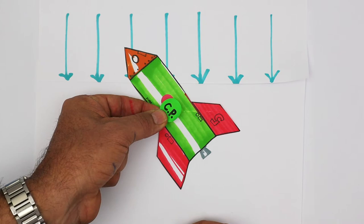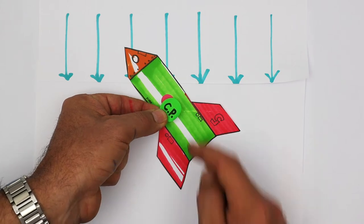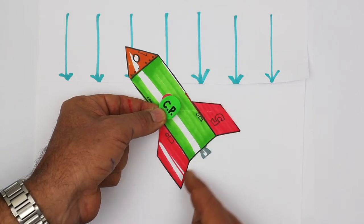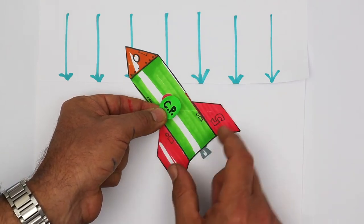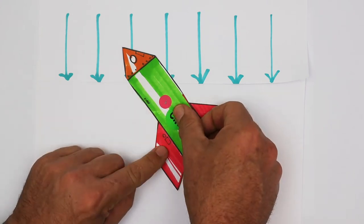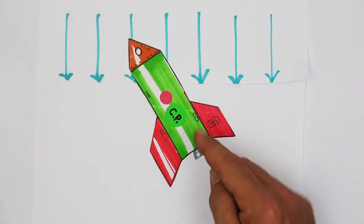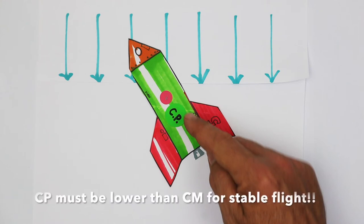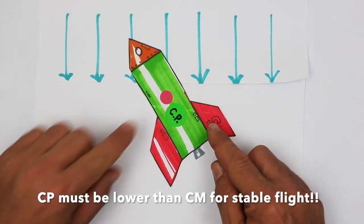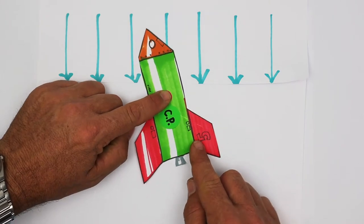The centre of pressure is the point on the rocket where the area on one end is equal to the surface area on the other end. These big fins mean there's more surface area towards the bottom. So the centre of pressure could be roughly around there. It's important to note that the centre of pressure has to be below the centre of mass. And that's what keeps a rocket stable.